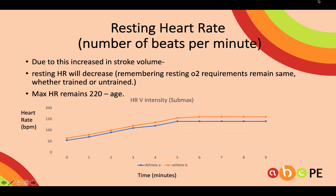A fact that will come up in SACs or exams asks you to identify the trained athlete between athlete A and athlete B. The best place to look is resting heart rate. Athlete A has a lower resting heart rate, meaning they must be the trained athlete, because their stroke volume has increased, allowing the heart to beat less often.